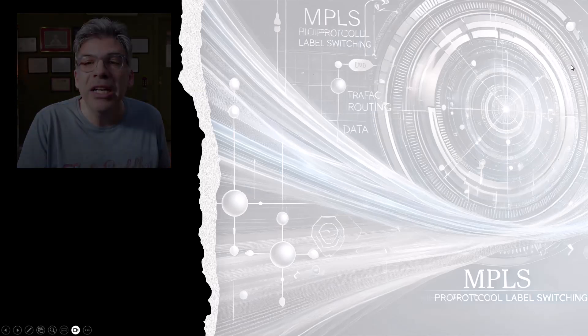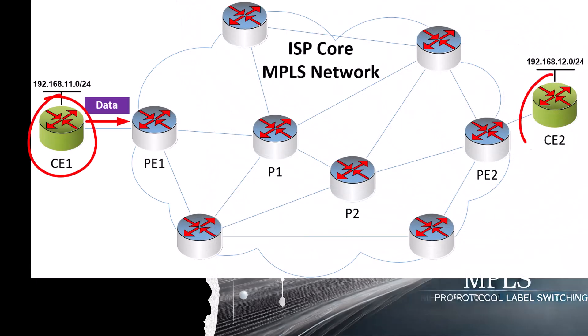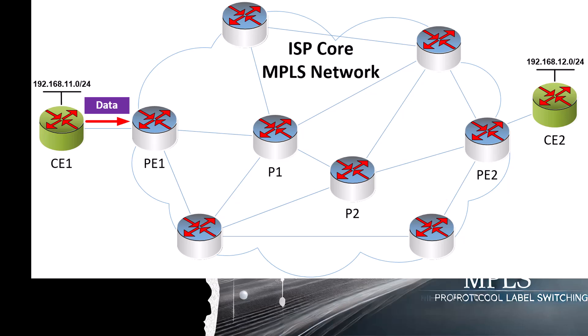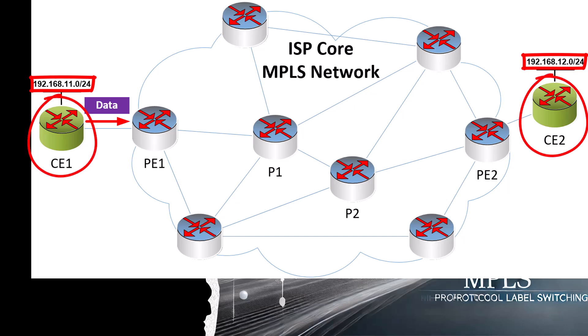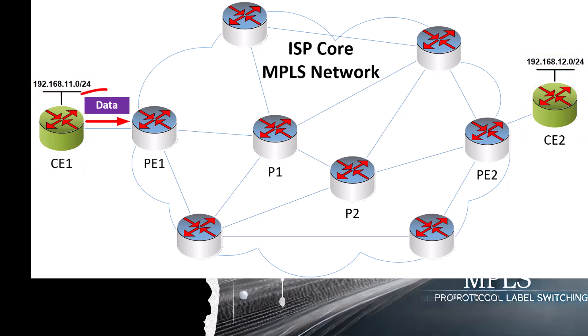Here we have two customer devices, CE1 and CE2, and we have an MPLS infrastructure being used by the ISP to interconnect these two sites. In our scenario, some host on the 192.168.11.0/24 network is sending data to the 192.168.12.0/24 network. Remember, the CE routers know nothing about MPLS, so they'll send their data based on the routing protocol running between the CE and PE routers. So the packet arrives at PE1.